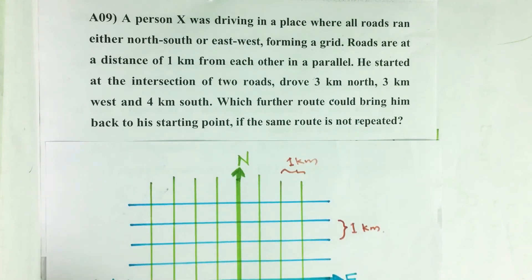Roads are at a distance of 1 kilometer from each other in parallel. He started at the intersection of two roads, drove 3 kilometers north, 3 kilometers west, and 4 kilometers south. Which further route could bring him back to his starting point if the same route is not repeated?